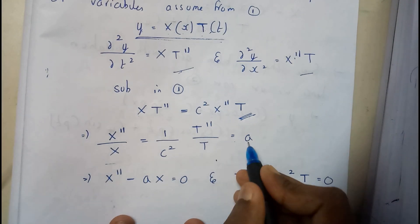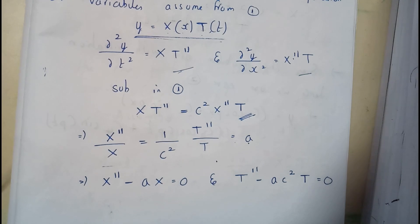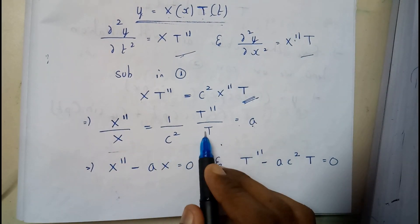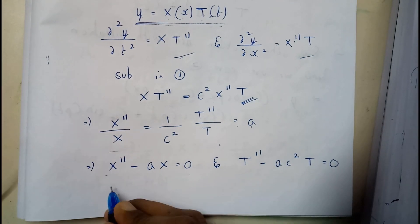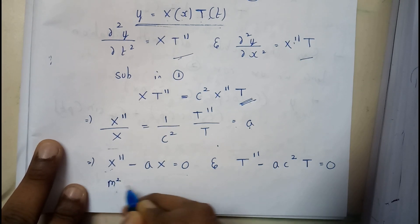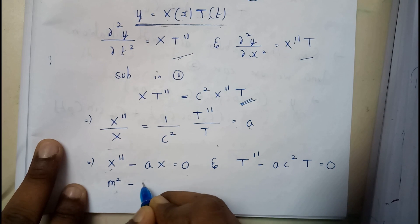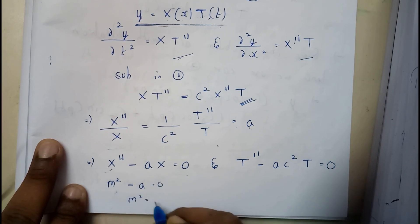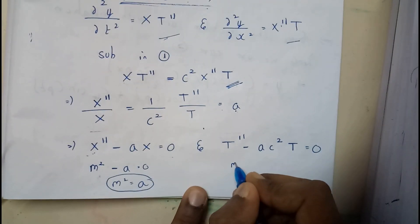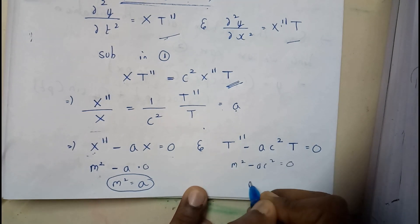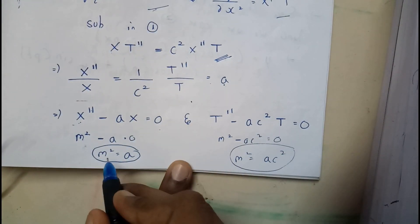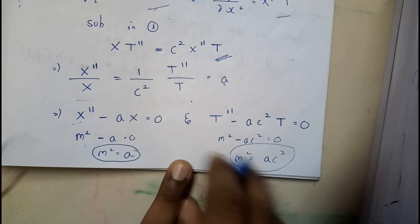I assumed this equals a constant 'a'. Now I will take cases — taking equations one and three, then two and three. Using the auxiliary equation, m² = a, and m² = ac². As we don't know the exact value of a, we will consider three cases: initially assuming a = p² (positive), then a = −p² (negative), and finally a = 0. These are our three conditions.